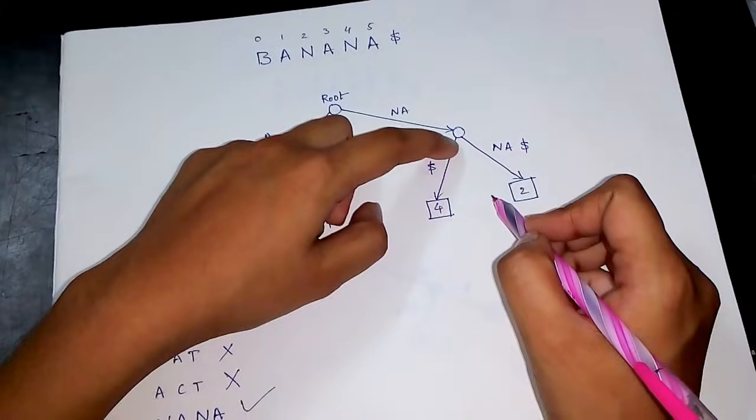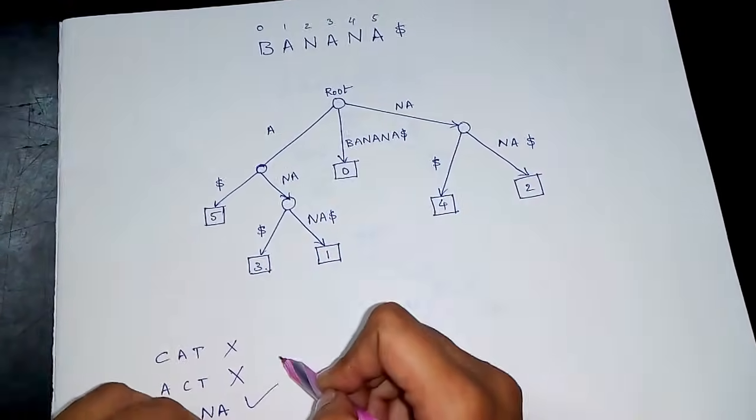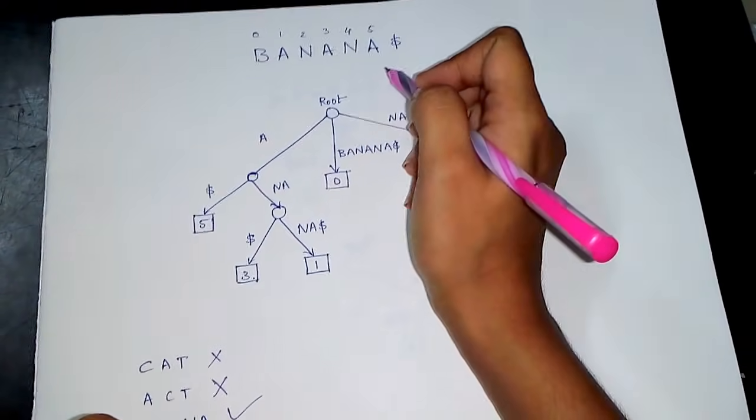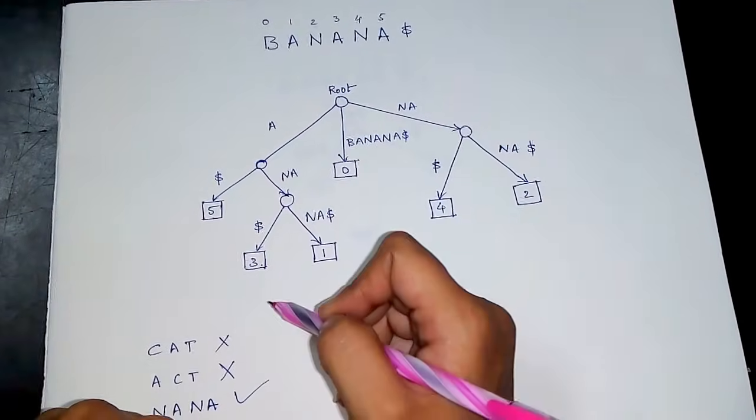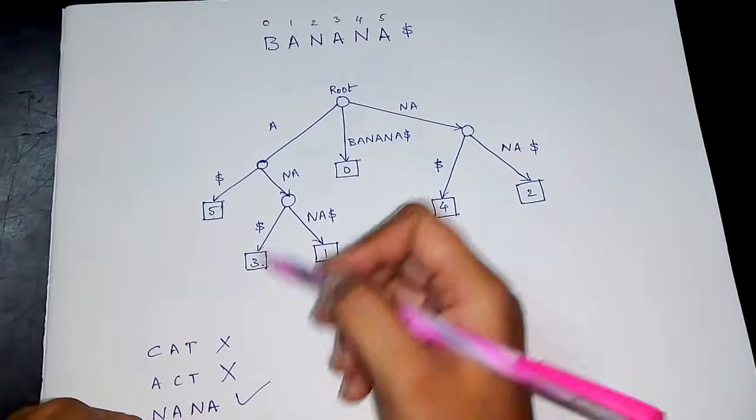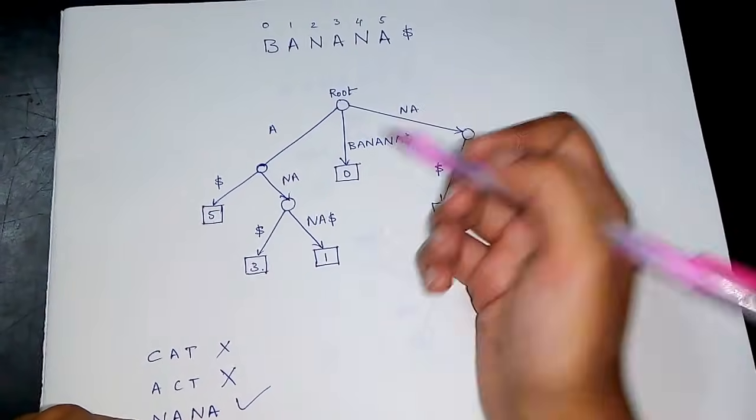...there is a 'na' and then 'na' at position 2, so 'nana' is a substring of banana from position 2. This is how we find if a string is a substring of another string or not.